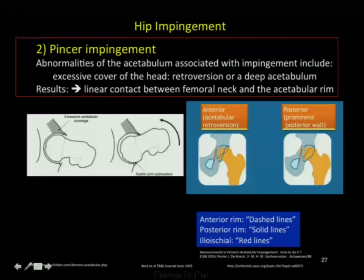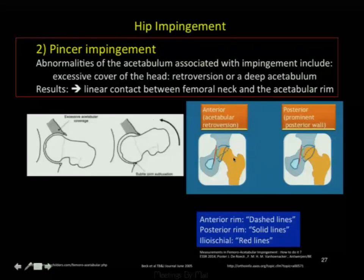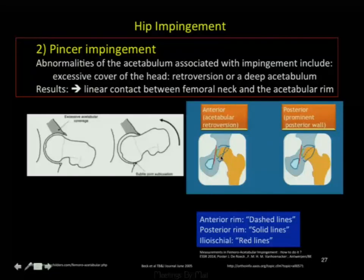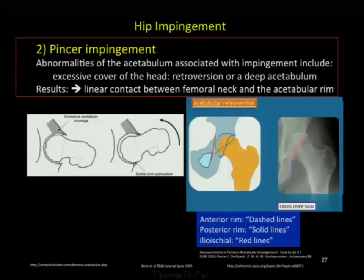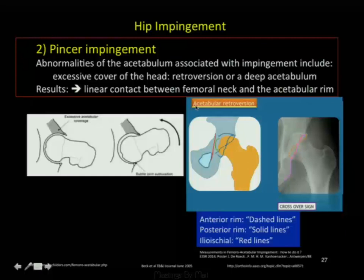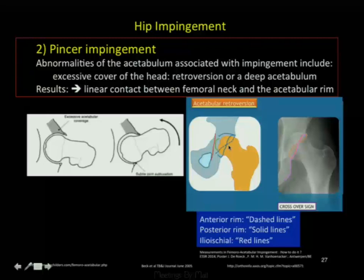The dashed lines represent the anterior rim of the acetabulum and the solid line represents the posterior rim, showing how it abnormally covers. This is anterior acetabular retroversion, and the red line represents the ilioischial line as a reference. In the blown-up example of retroversion, you can see the overcoverage illustrated with the dotted line.